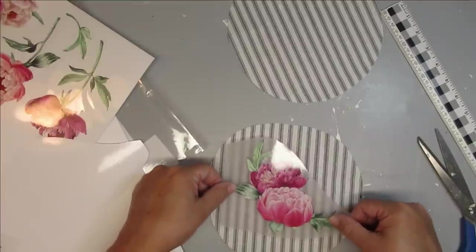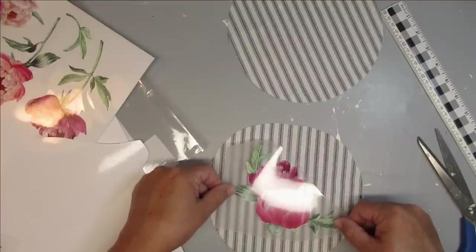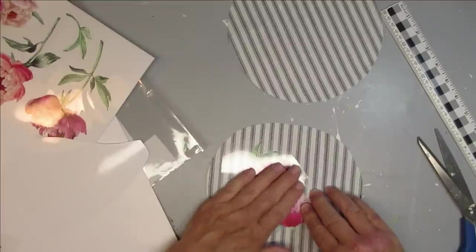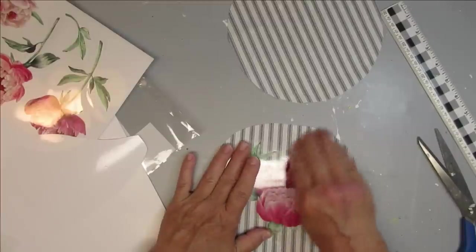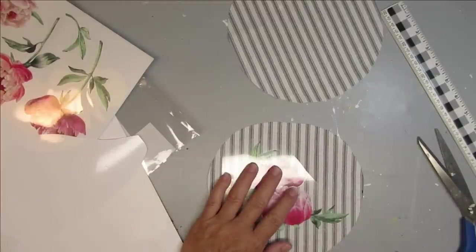So I'm going to cut out this one that's got two of them together and that will be for one of the circles and then I'm going to add a little bit of a different design for the second circle.